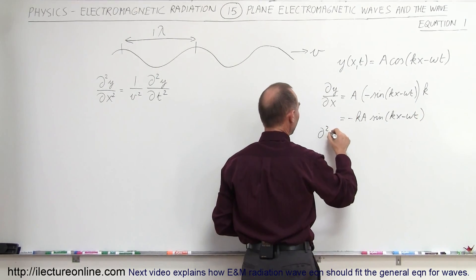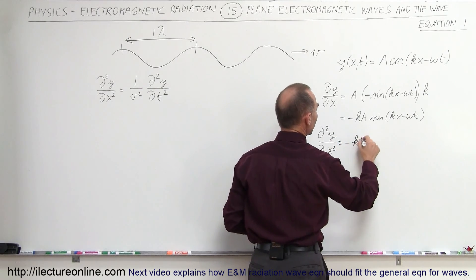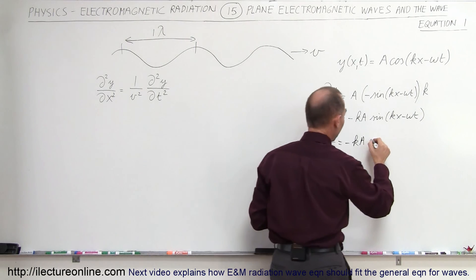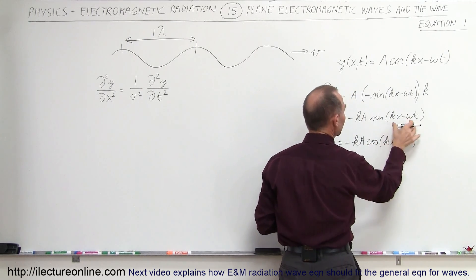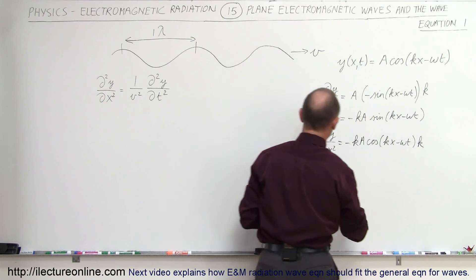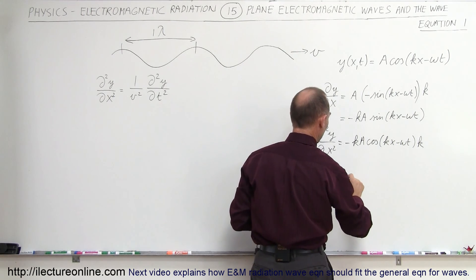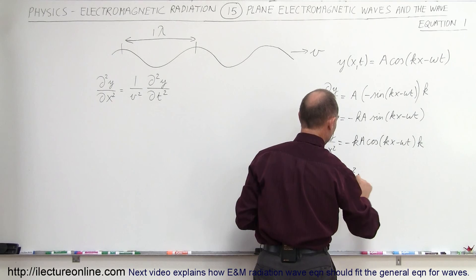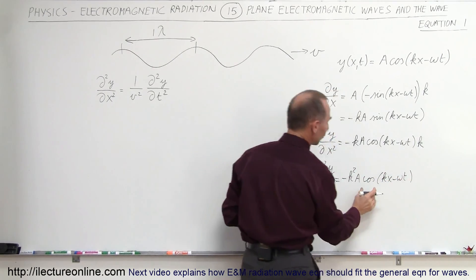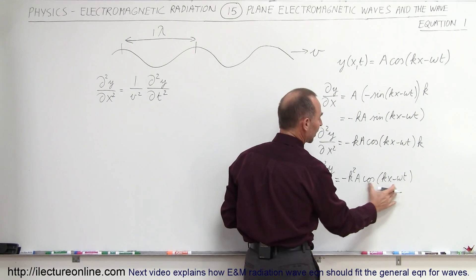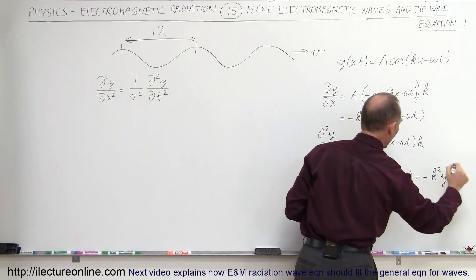Taking the second derivative, we get minus kA times the derivative of the sine, which gives the cosine of kx minus omega t, times the derivative of the angle with respect to x, which is again k. So the second derivative of y with respect to x equals minus k squared A times the cosine of kx minus omega t. Since A times cosine of kx minus omega t is the original function y, this simplifies to minus k squared times y.